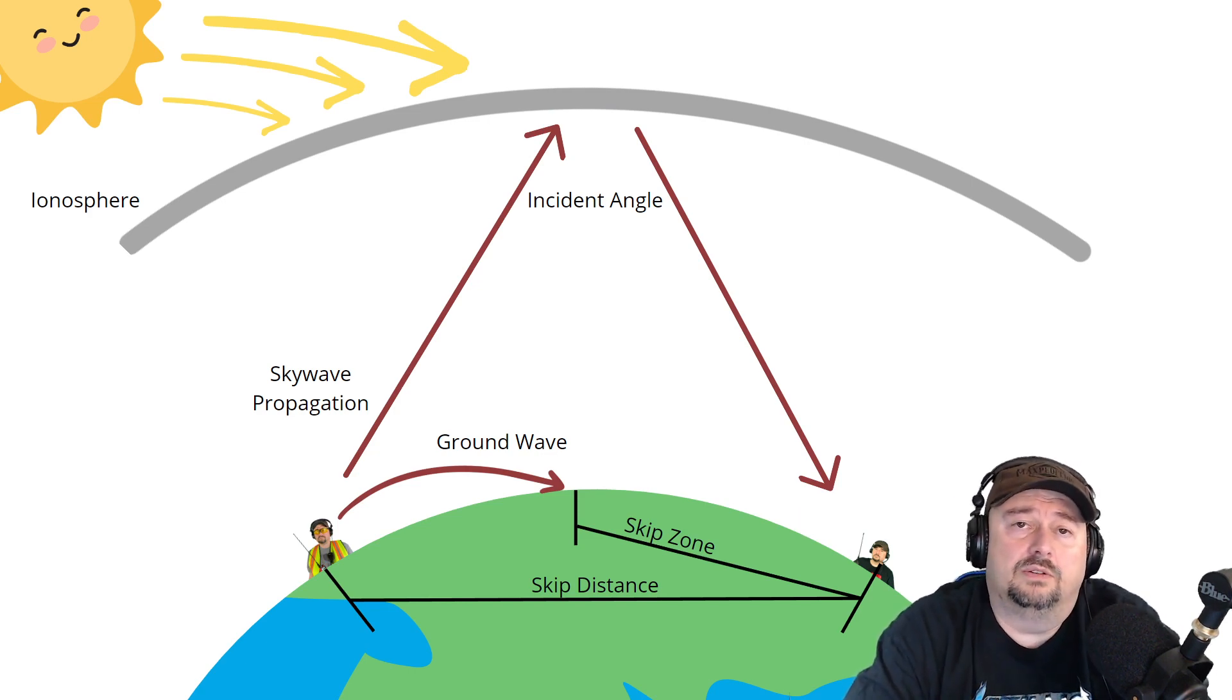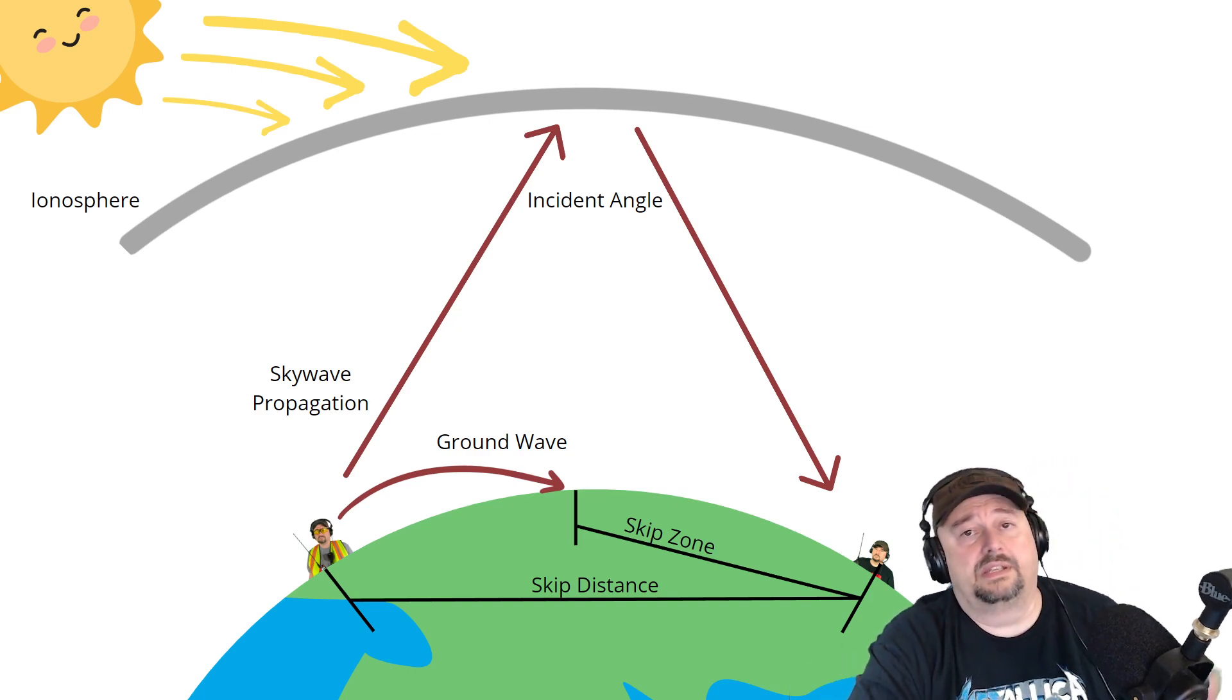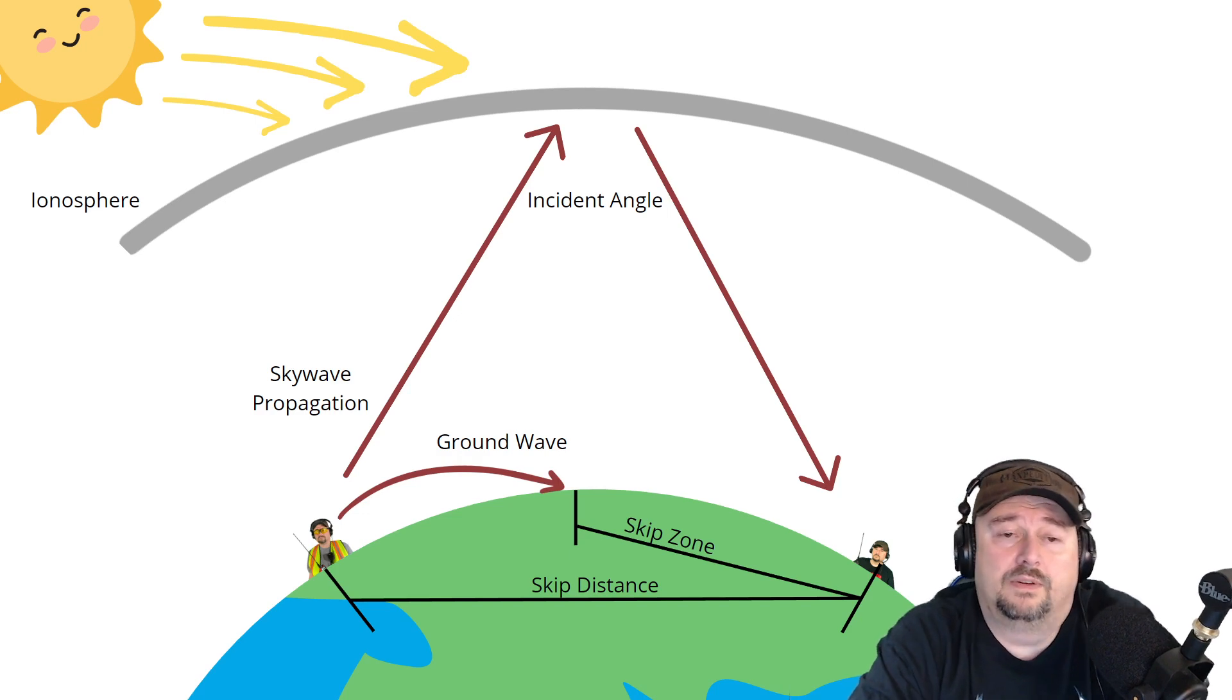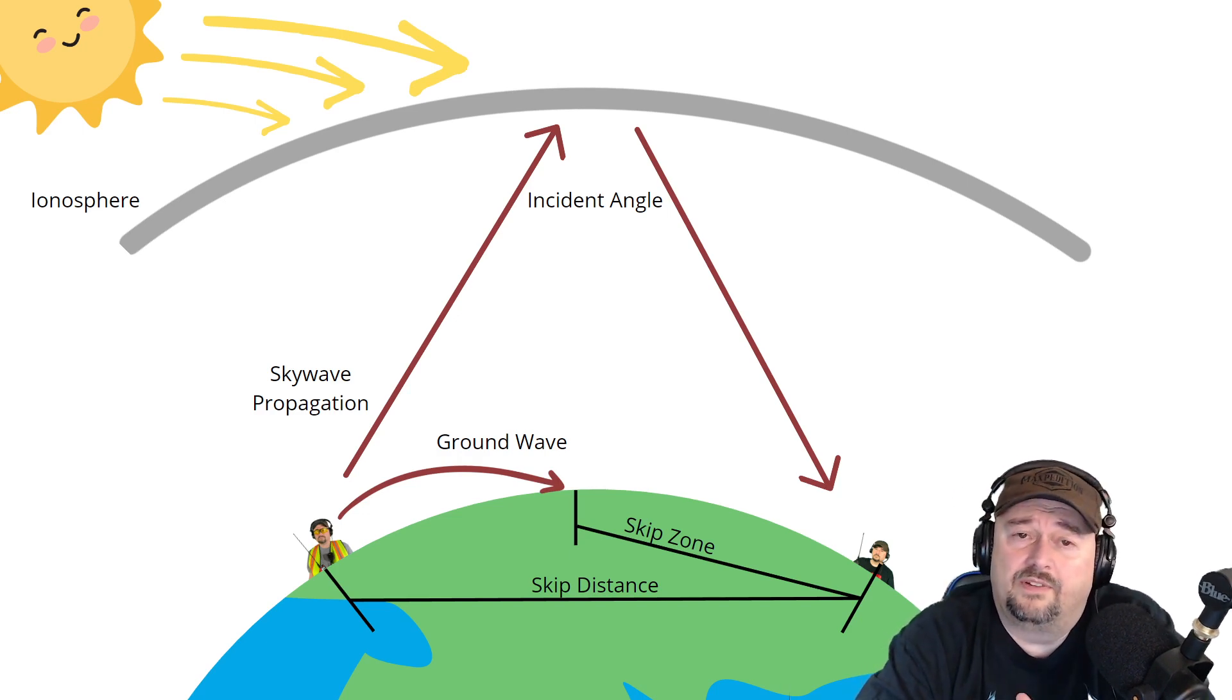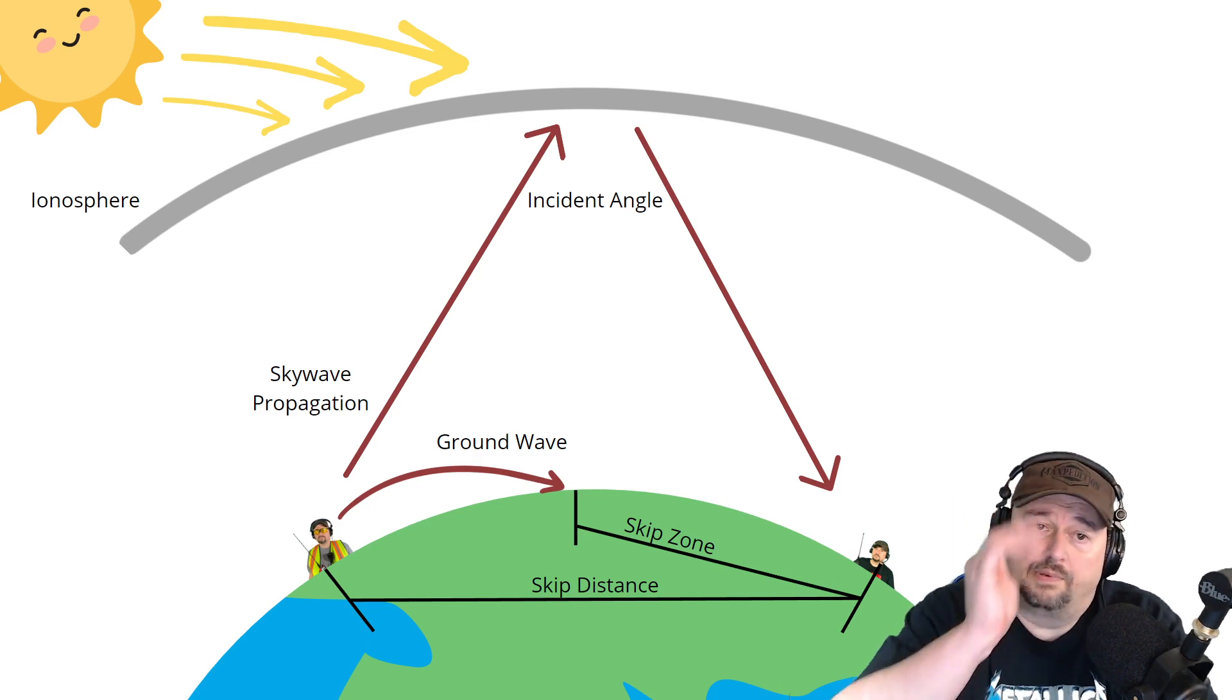Now, you can vary this angle. At a lower angle, you go further, so it's good for DX. A lot of people say that that's why they use vertical antennas. They have better low takeoff angle. Or you can make the angle very, very steep. And at its steepest, we call that near-vertical incident sky wave. And that's pretty much when you go up and you come right back down.